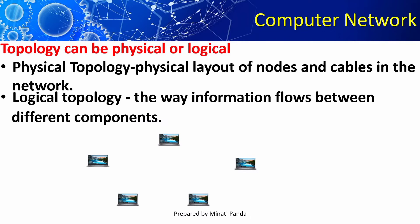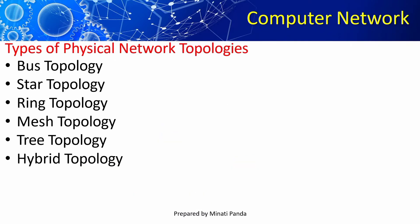Now we will see the various topologies in detail. The types of physical topology are bus topology, star topology, ring topology, mesh, tree and hybrid topology.